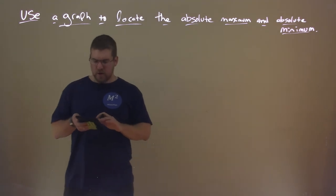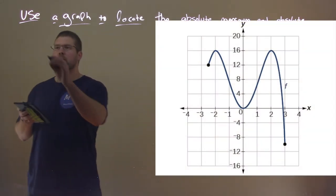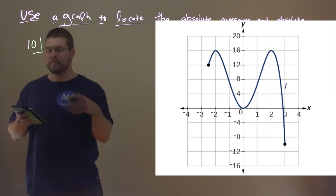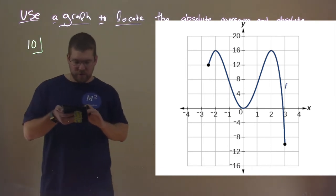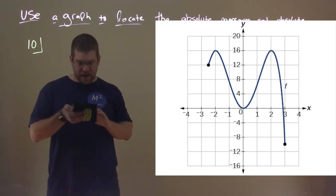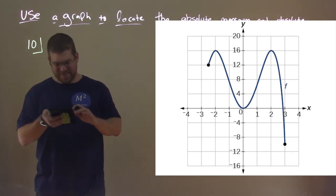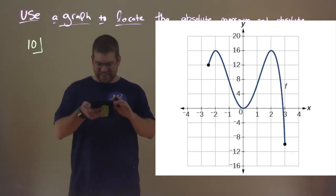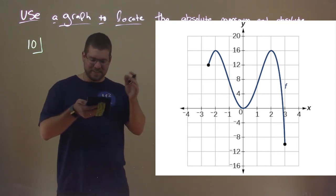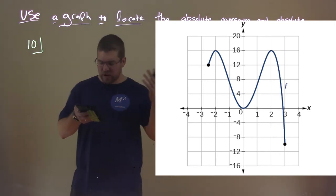Alright, so let's go look at a graph here. We're at number 10. In this graph here, we want to find all absolute maximum and absolute minimums. And this one gets you. It's a little... Well, we'll see. We'll dive into it. So let's look at our graph here. What do we notice?